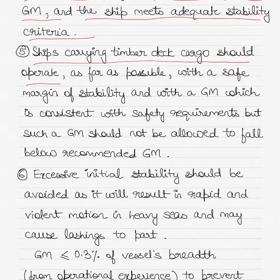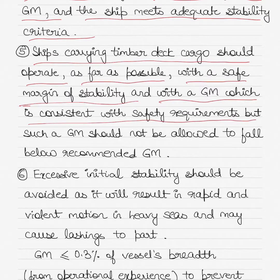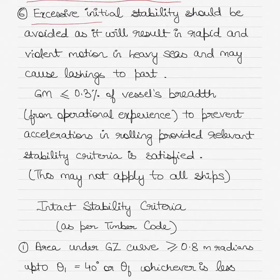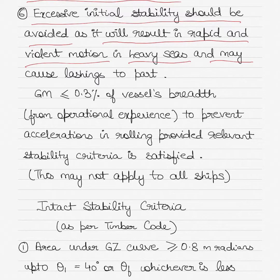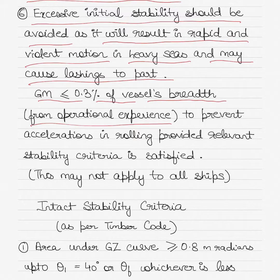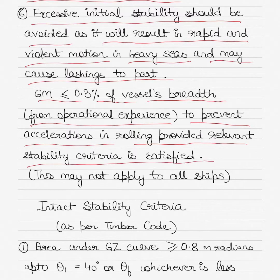Ships carrying timber deck cargo should operate as far as possible with a safe margin of stability and a GM consistent with safety requirements, but GM should not be allowed to fall below the recommended value. Excessive initial stability should be avoided as it will result in rapid and violent motion in heavy seas and may cause lashings to part. GM should be less than or equal to 0.3 percent of the vessel's breadth, from operational experience, to prevent accelerations in rolling — provided relevant stability criteria is satisfied. However, this may not apply to all ships.